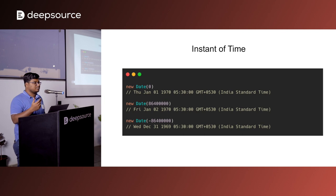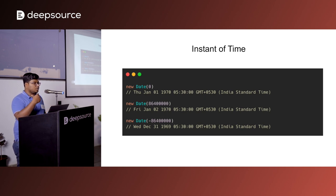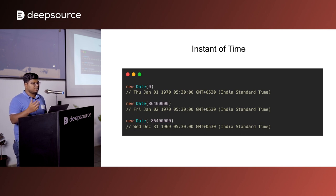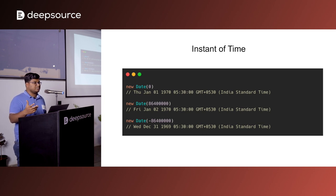When passing zero to the Date constructor, it represents Jan 1 1970 — the Unix epoch time. When I pass a number like 86,400,000 — the number of milliseconds in one day — it adds one day to the epoch, giving Jan 2nd. Passing the same number as negative subtracts one day, giving December 31, 1969. This shows that JavaScript represents time as an instance internally. Also, when printing results, it takes the time from my system — it shows Indian Standard Time. The JavaScript Date API currently defaults some methods to UTC and others to your local system timezone.